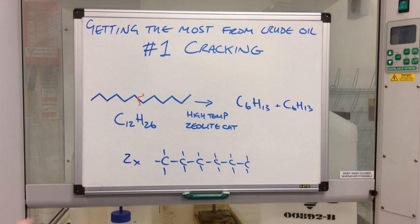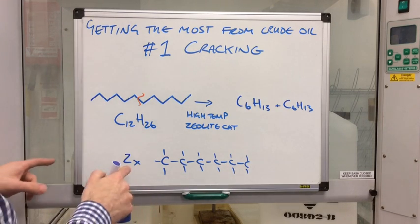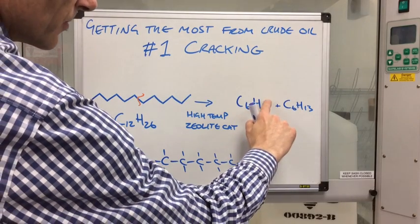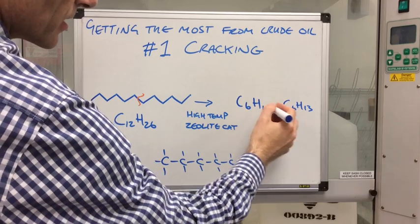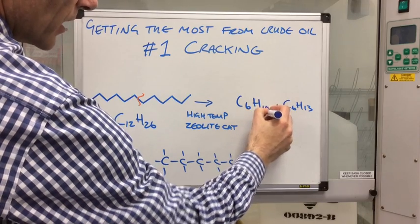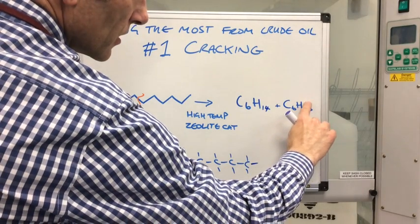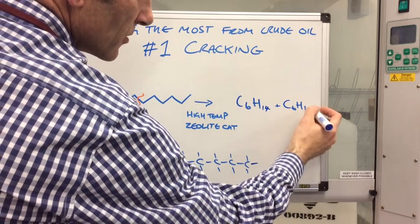Now both of them are in that situation. So what happens is if we steal a hydrogen from this one, we would make C6H14. So effectively we'd make that. And that means that goes down to H12.